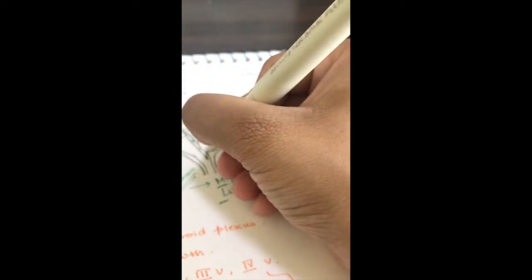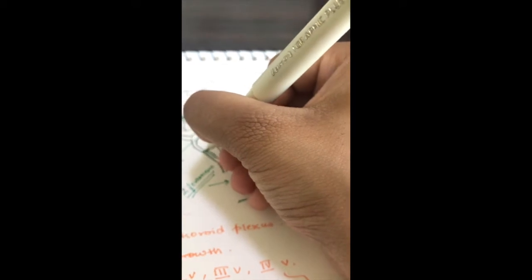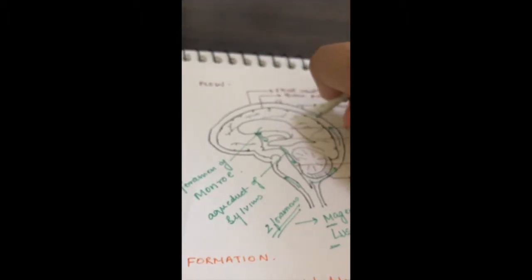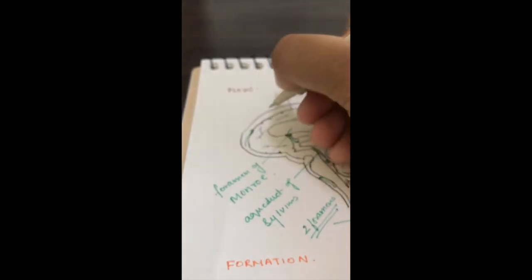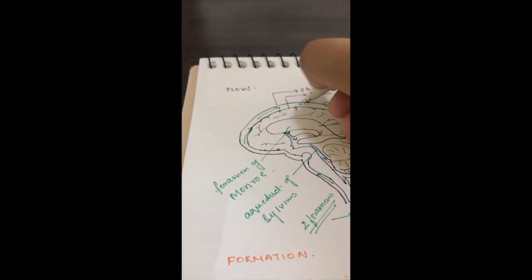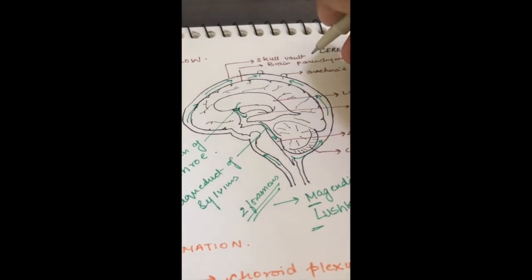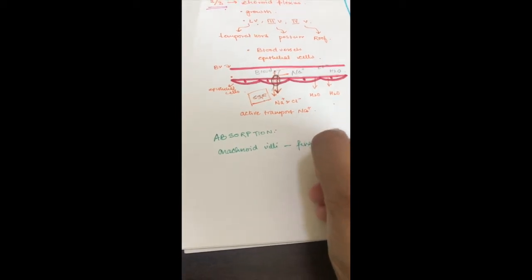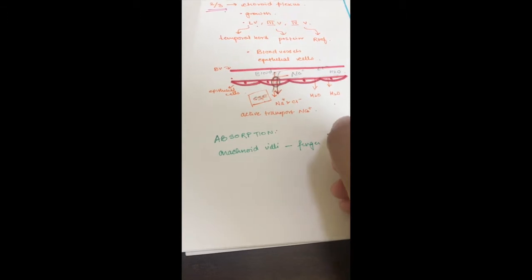CSF then enters the subarachnoid space and travels upwards on both sides, eventually reaching the arachnoid villi. The arachnoid villi are where absorption of CSF occurs. They are finger-like projections of the arachnoid layer of the meninges, and they act like valves.